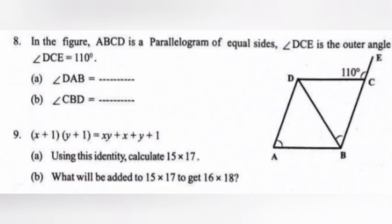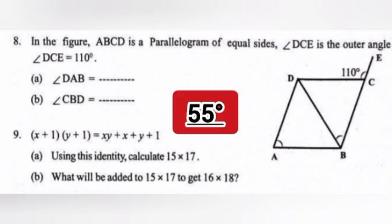8. In the figure, ABCD is a parallelogram with equal sides. Angle DCE is the outer angle, and angle DCE equals 110 degrees. A. Angle DAB equals 70 degrees. B. Angle CBD equals 55 degrees.